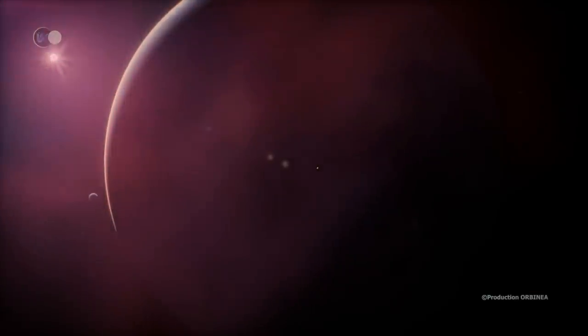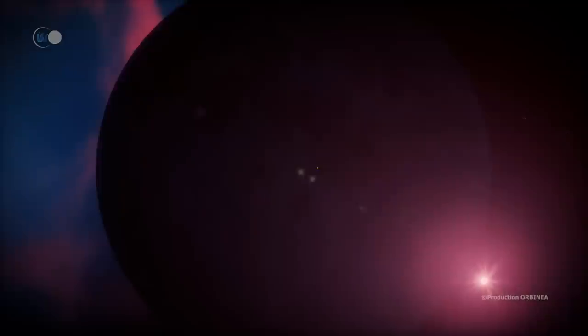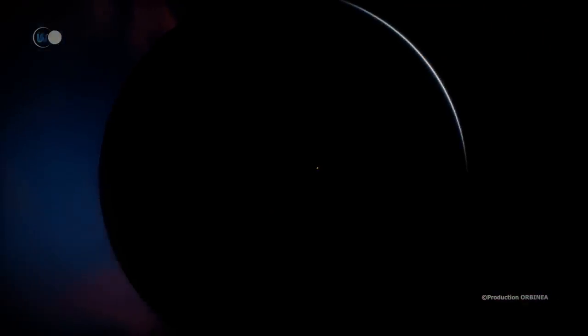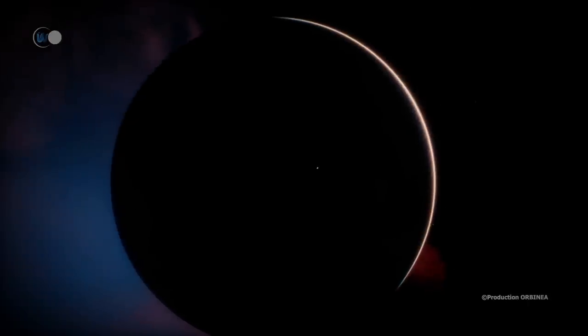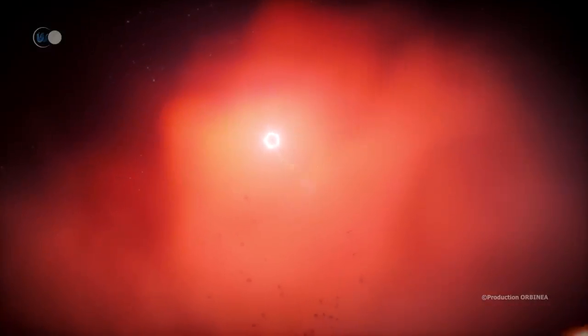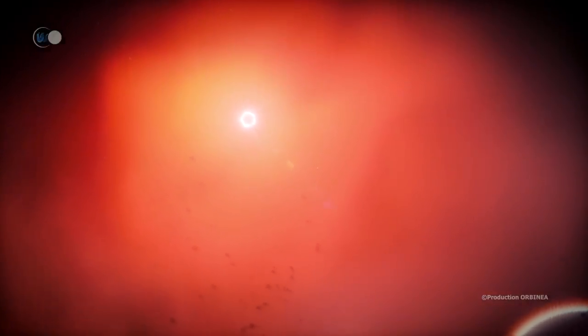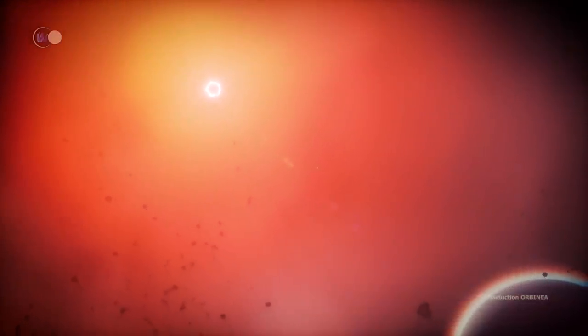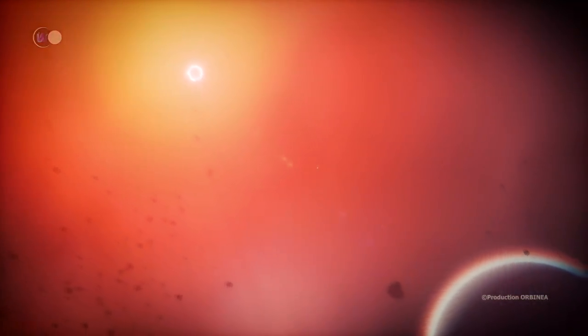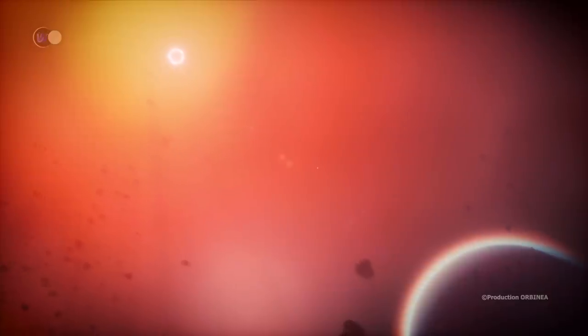In place of our sun, the faintness of Wolf 359 would represent about 10 times the brightness of our full moon. Not enough to cause us the slightest sunburn, even worse, not enough to hope for any presence of life on our planet, which would then be covered with ice. However, this young spinner, at least 100 million years old, and whose projected rotation speed is less than 3 kilometers per second, or 2 miles per second, is a flare star.